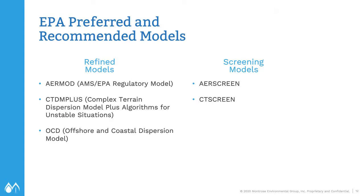You can find EPA's preferred and recommended models in Appendix W. Preferred and recommended means that a case-by-case justification is not needed to use these models, as long as you are using them in the regulatory default mode. They are divided into refined models and screening models. Screening models provide a more conservative estimate of concentrations, require less data and time, and are designed for when you have only one source. AERSCREEN is the screening model for AERMOD, and CTSCREEN is the screening model for CTDMPLUS. AERMOD is required for most regulatory applications, so we will go into more detail for this model.